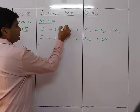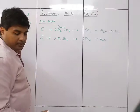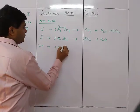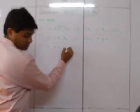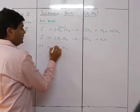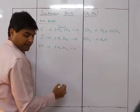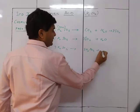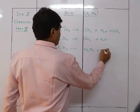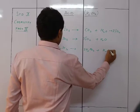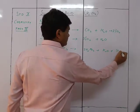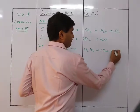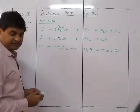For phosphorus: 2P + 5H₂SO₄ (concentrated) → 2H₃PO₄ + 2H₂O + 5SO₂. The balancing coefficients are 2 and 5.